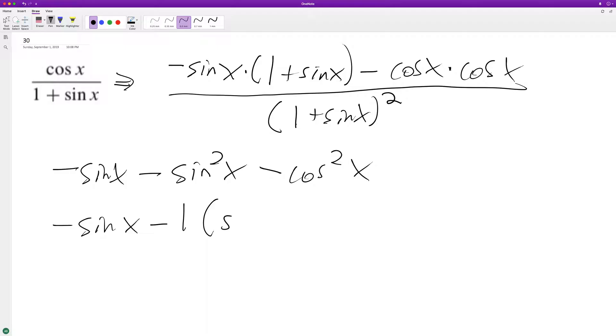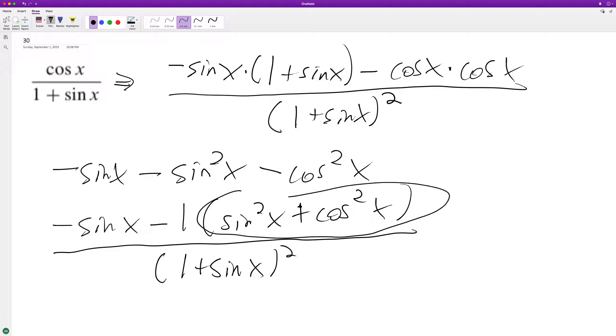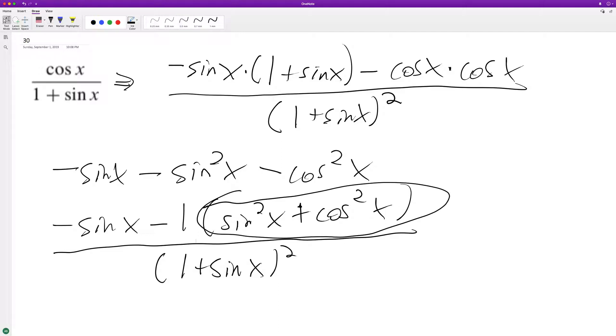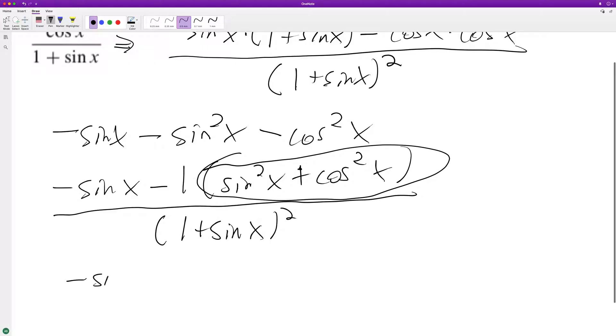Out of sine squared x and the cosine x, so it becomes sine squared x plus cosine squared x all over one plus sine x squared. So this is a trig property, it's equal to one. So we end up with minus sine x minus one over one plus sine x.